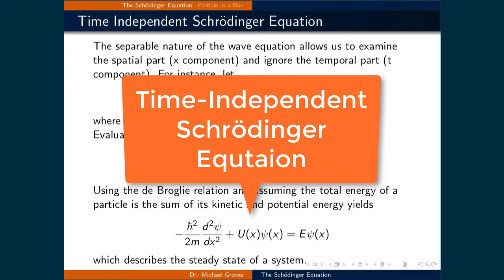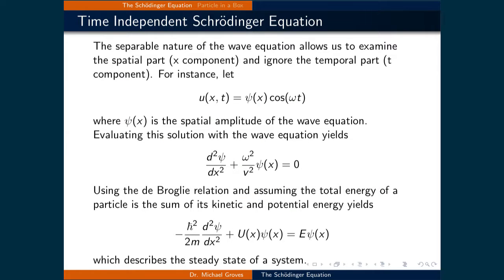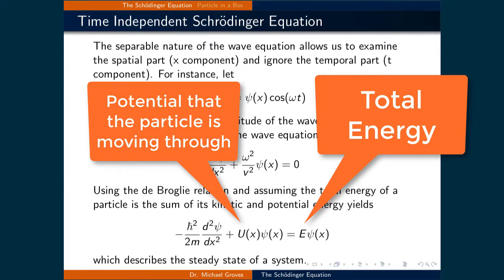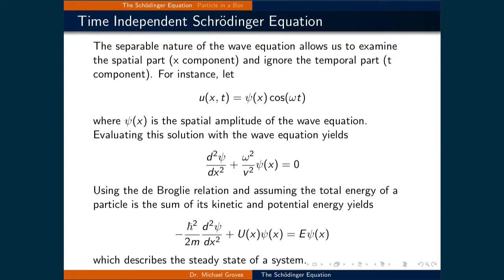This is called the time-independent Schrödinger equation, and it describes the steady state of a system. ℏ is called the reduced Planck's constant, and it's just h divided by 2π. E is the total energy of the system, and U is the potential that a particle of mass m is moving in. There is a time-dependent version of this equation, however many problems can be solved by looking solely at the steady state solutions.